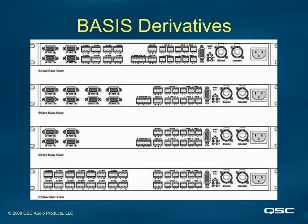The top three in this screen are all 900 series models intended to connect to QSC amps that have data ports, while the bottom unit, a 522AA, has eight Euroblock outputs instead of data ports. That particular unit can send balanced line-level audio to any amp or audio device.